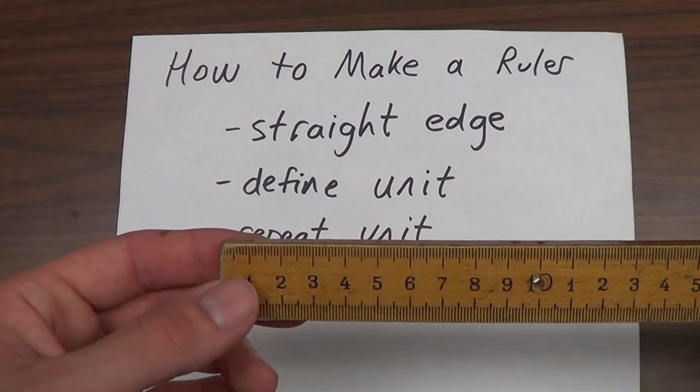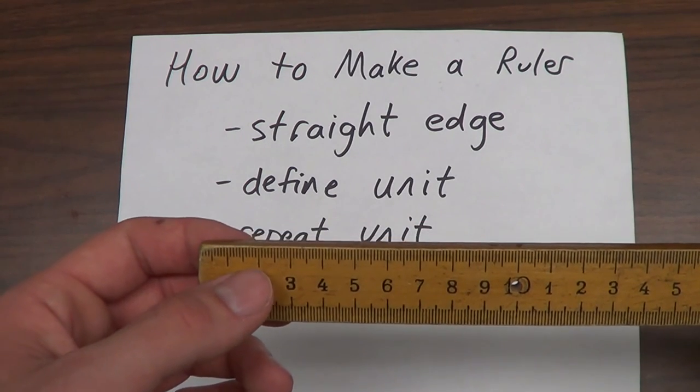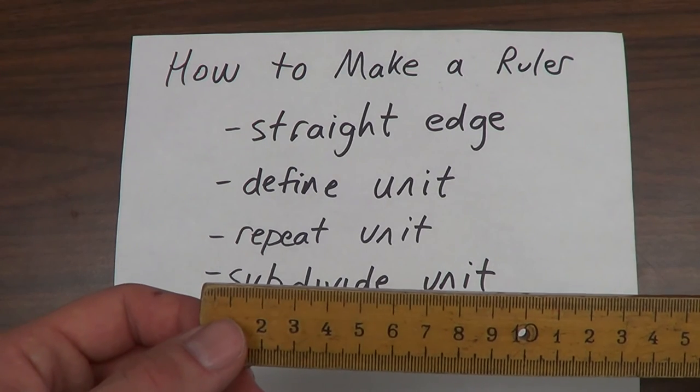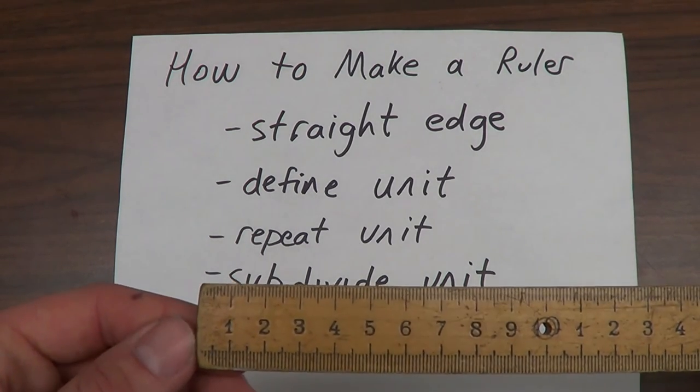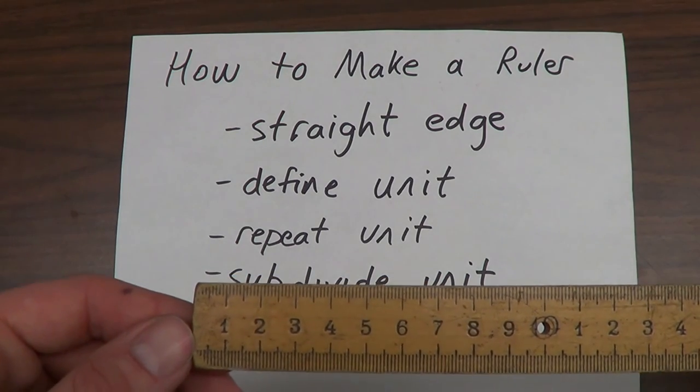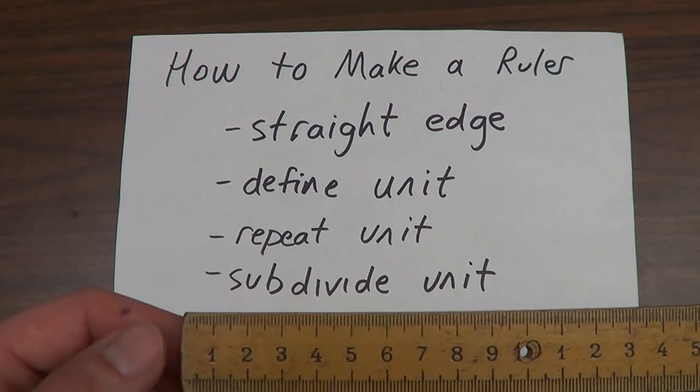and we've taken a centimeter and divided it into ten subdivisions, we can see that it would be hard to introduce another ten subdivisions here. So the question is, if we want more precision for our ruler, how do we go about finding that?